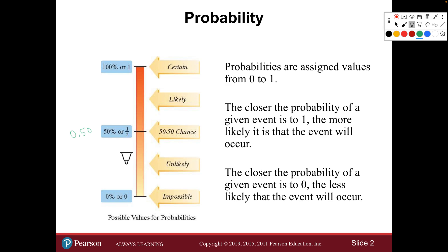Remember Dumb and Dumber? He asks the girl what his probability is, and she says something like one in a million — trying to kindly say it's basically zero percent. But he focuses on 'so there's a chance' and thinks it's closer to 100 percent because he thinks he's so cool. That's subjective probability — what we think will happen, our gut feel. Sometimes we're right — everyone says your team has no chance and they win.